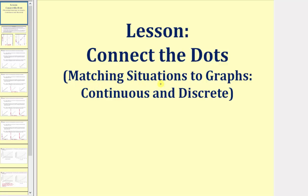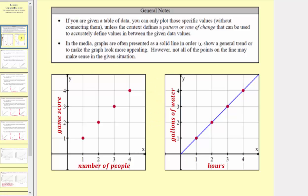Welcome to a lesson on matching situations to graphs. If you are given a table of data, you can only plot those specific values without connecting them unless the context defines a pattern or rate of change that can be used to accurately define values in between the given data values. We'll look at two examples of this in just a moment.